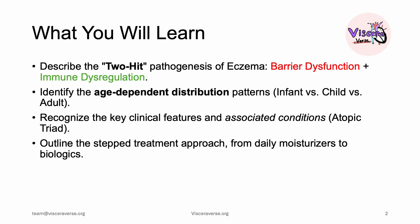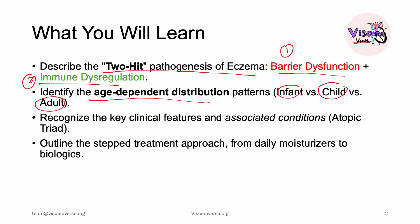By the end of this lecture, you'll understand eczema from the genetic level to the clinic and be able to create a basic management plan for a patient with eczema. We'll discuss the two-hit pathogenesis, age-dependent distribution patterns, key clinical features and associated conditions like the atopic triad or atopic march, and the stepped treatment approach from daily moisturizers to biologics.